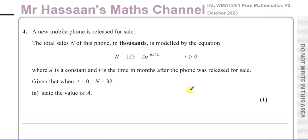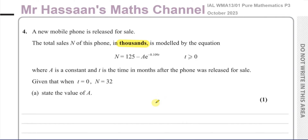It says a new mobile phone is released for sale. The total sales of this phone in thousands — and we have to be careful, it's in bold type — so the value of n, wherever n comes out, when t equals 0 and n equals 32, it means 32,000. So if they ask for the number of mobile phones when time equals 0, you say 32,000, not 32. The total sales n in thousands is modeled by n equals 125 minus a times e to the power of negative 0.109t, where t is greater than or equal to 0, a is a constant, and t is time in months after the phone was released.